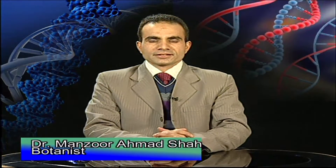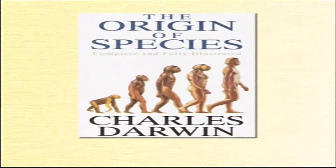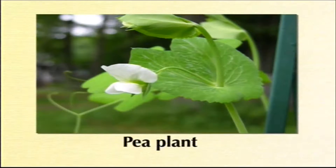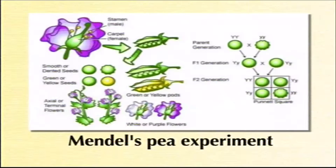Hello dear students and welcome to this series of lectures in botany. Today our topic is DNA, the genetic material. While Darwin was writing the Origin of Species, Mendel was carrying out a series of classical experiments with garden pea in his monastery garden from 1856 to around 1863, providing useful insights about heredity and marking the beginning of modern genetics.